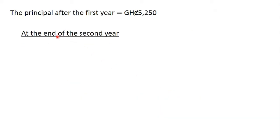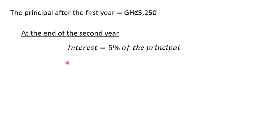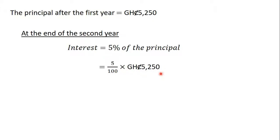Now let's calculate the interest at the end of the second year. We know that the principal after the first year is five thousand two hundred and fifty Ghana cedis. Because we are calculating compound interest, we are going to use this new principal. So the interest at the end of the second year is five percent of five thousand two hundred and fifty Ghana cedis, which is five divided by 100 times five thousand two hundred and fifty Ghana cedis.